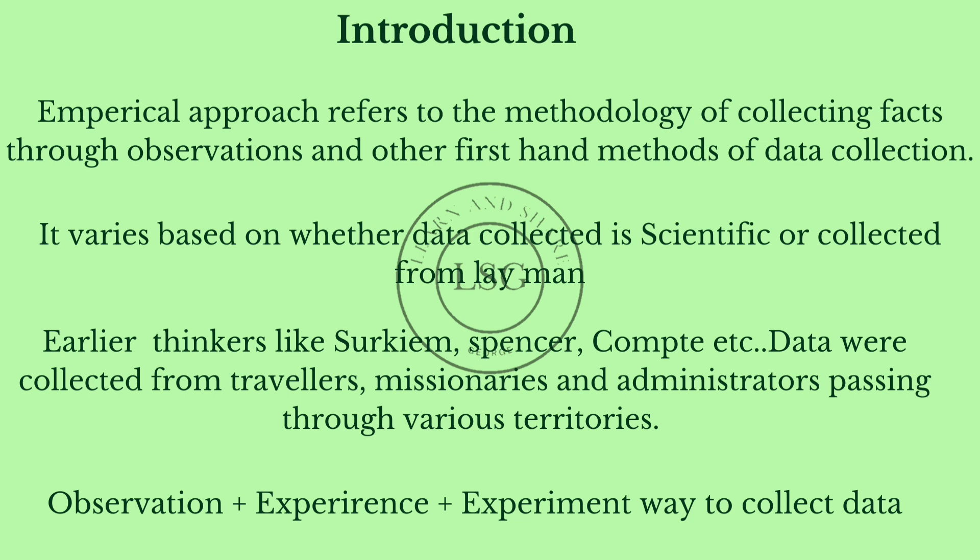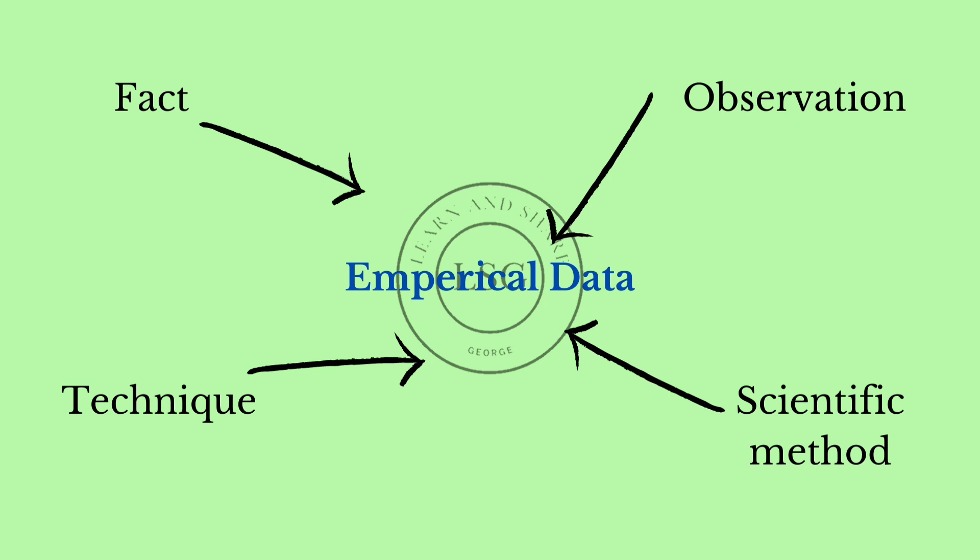They were able to do personal, one-to-one interaction. So in general, we call it observation plus experience plus experiment as the data collection kind of research methodology — the empirical approach. We call it fact, observation, technique, scientific method — this is all empirical data. That's the empirical research overall process.